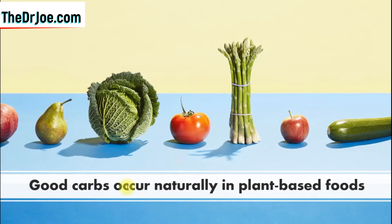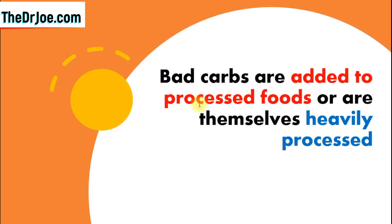Here is a simple rule: good carbs occur naturally in plant-based foods — good carbs reside in plant-based foods. In contrast, bad carbs are either added to processed foods or are themselves heavily processed. That's one distinction between good carbs and bad carbs.